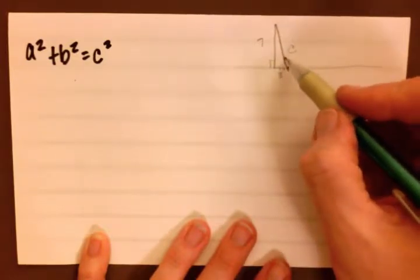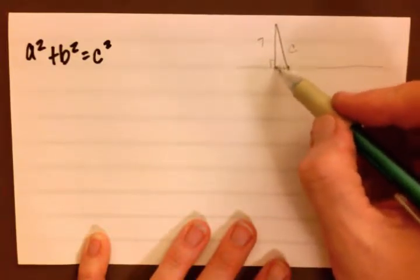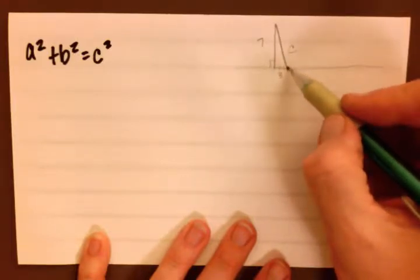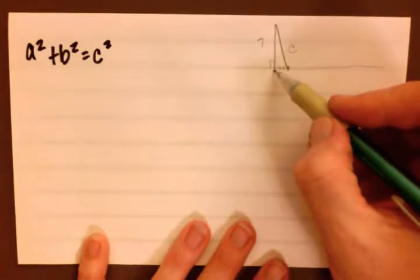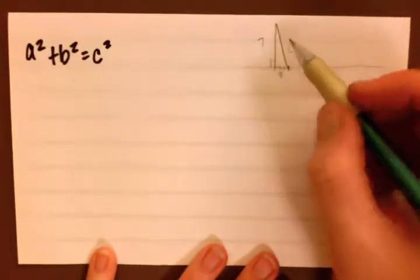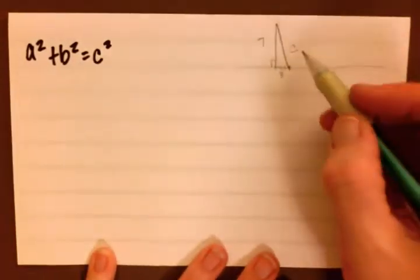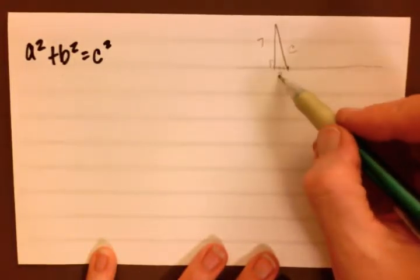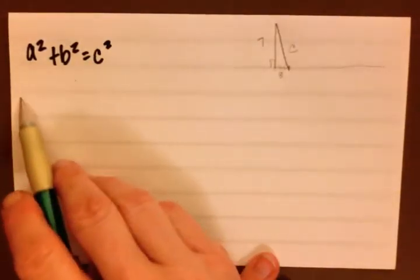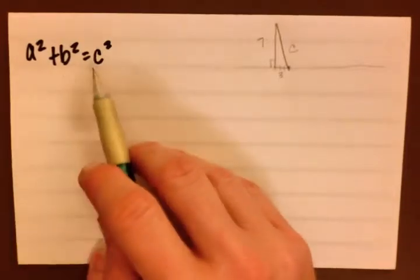Now remember, c is the hypotenuse, and the reason we know it's the hypotenuse is because it's always the side of the triangle that's across from the right angle. And c is the hypotenuse in this part of the equation. The two legs, seven and three, it doesn't matter at all which one we use for a or b, those are interchangeable.